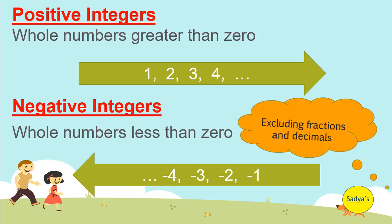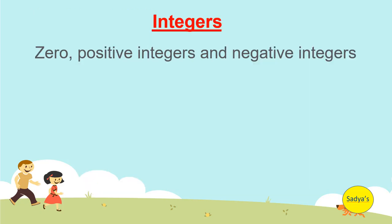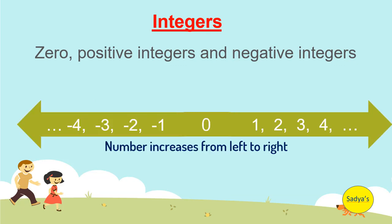Remember that fractions and decimals are not allowed. Integers in general is collection of zero, positive integers and negative integers. This is known as the number line, which we will discuss shortly.